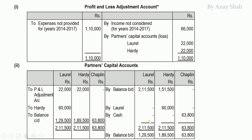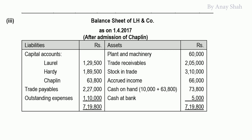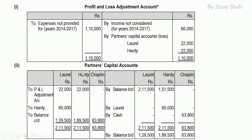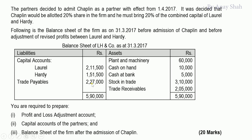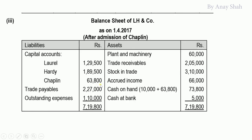In the final balance sheet: L's capital = 1,29,500; H's capital = 1,89,500; Chaplain's capital = 63,800 (as per capital accounts). Trade payables = 2,27,000 (as per old balance sheet, recorded as-is).